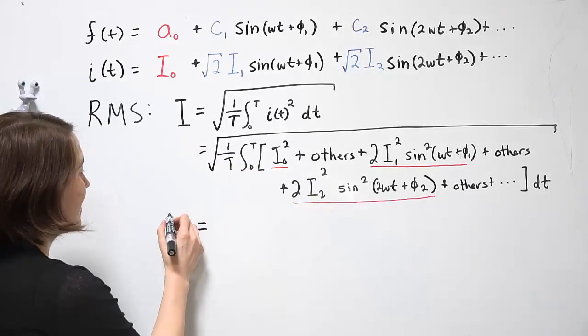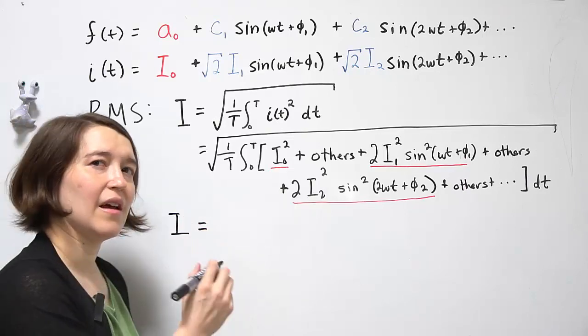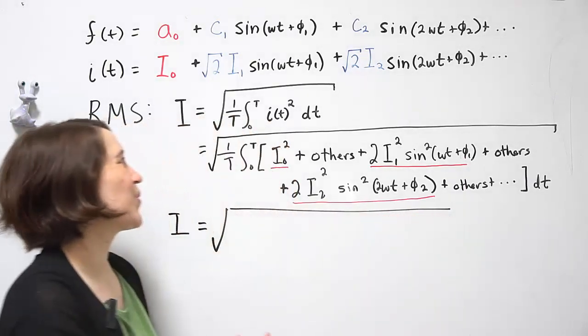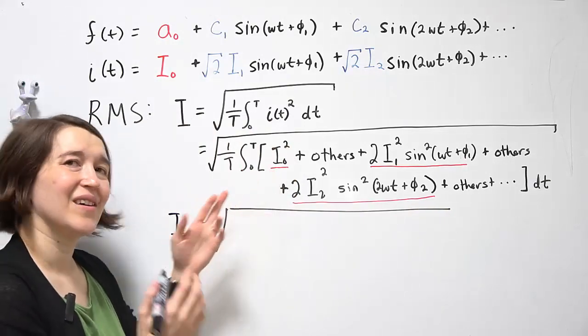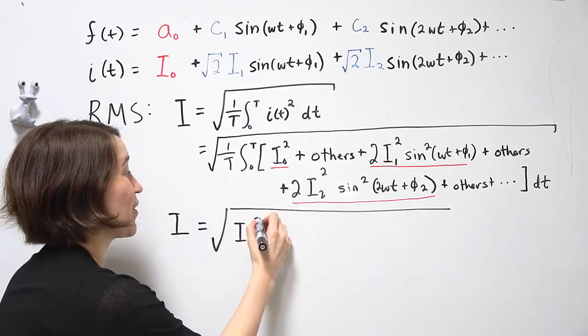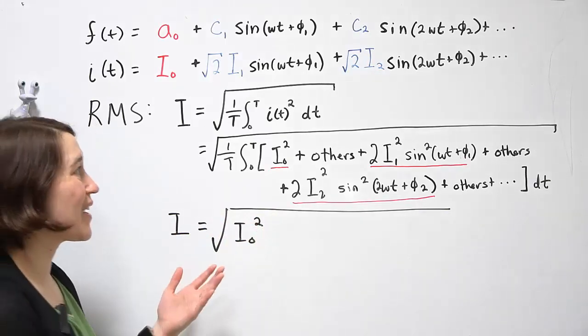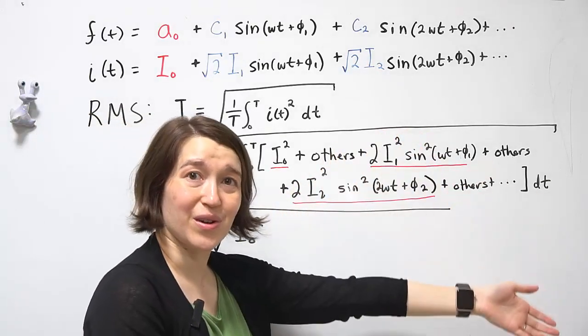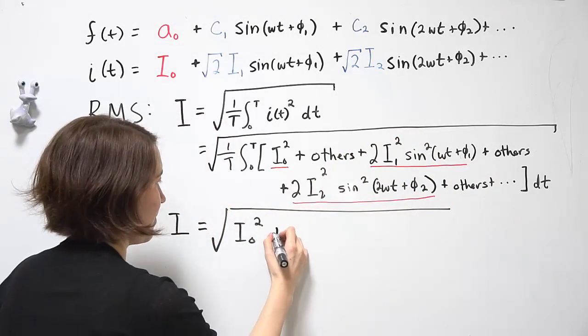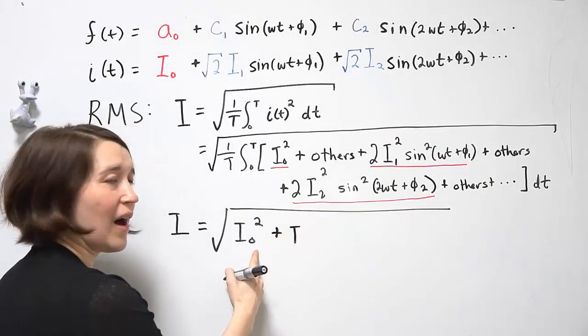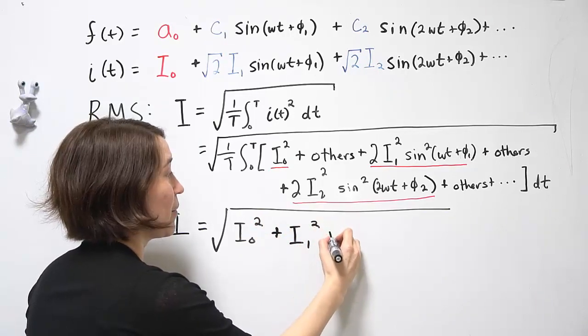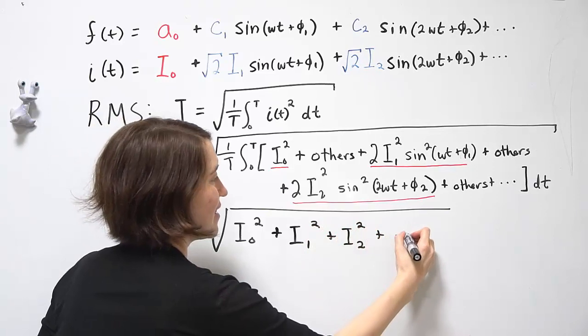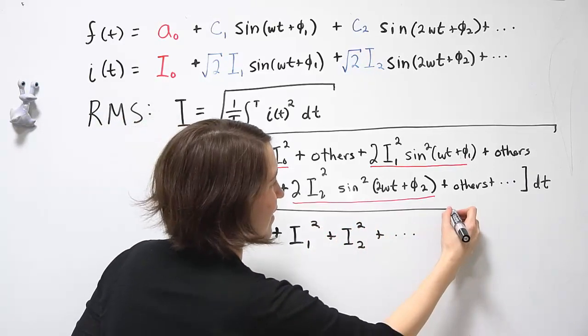What you'll get at the end is actually something that's not that bad. So we have our I0 term here squared. And we get essentially the RMS value for each of the higher order components squared. So I0 squared plus I1 squared plus I2 squared plus I3 squared and so on.